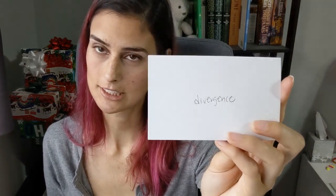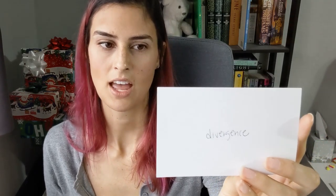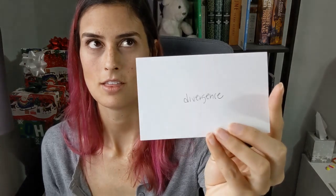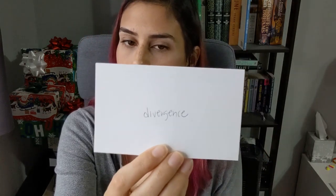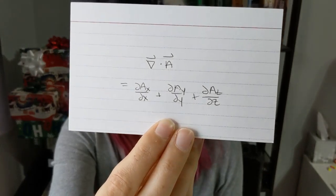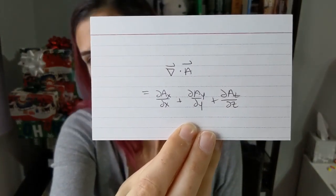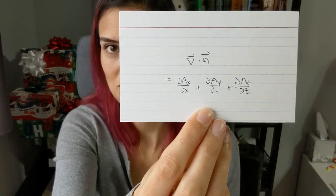Divergence: the del operator dot a vector equals the partial derivative of the x-component with respect to x, plus the partial derivative of the y-component with respect to y, plus the partial derivative of the z-component with respect to z. It's harder to say in words than it is to just look at the equation.